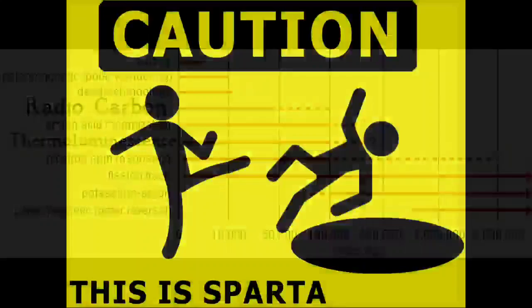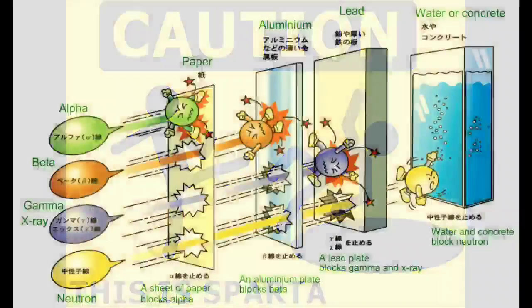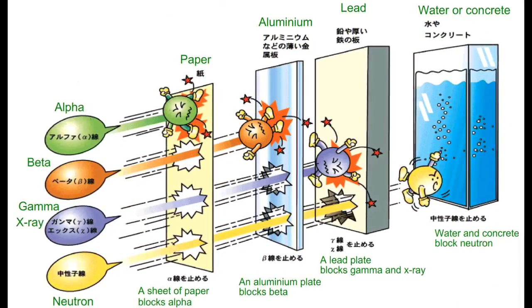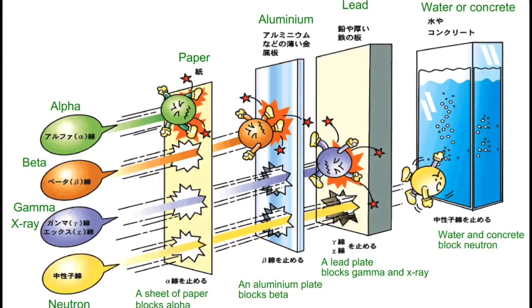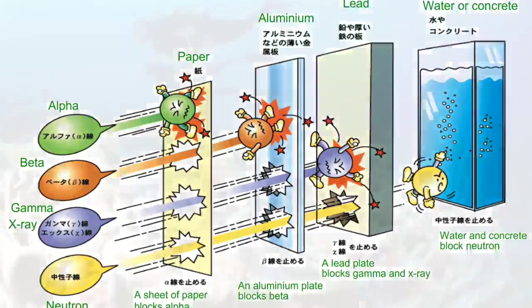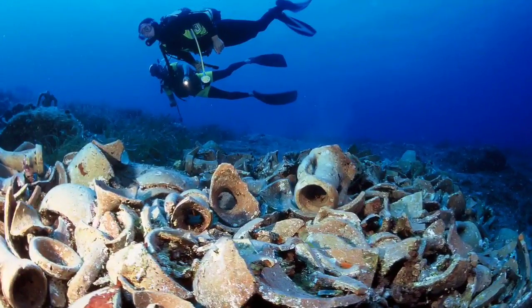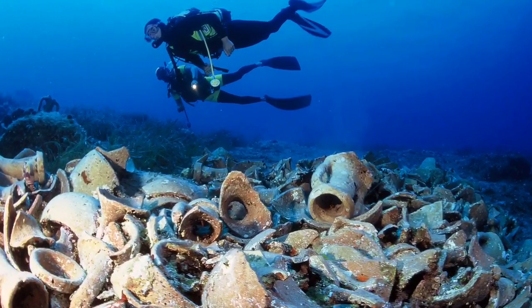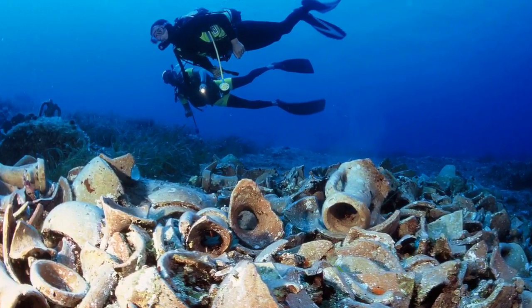However, we must take a moment to acknowledge some of the limitations of thermoluminescence. Radiation permeates objects and environments with varying rates of success. For example, an object found underwater will accumulate electrons far more slowly than an object found on dry land.